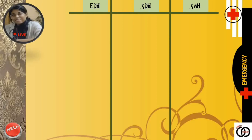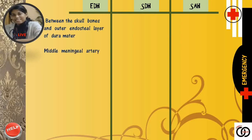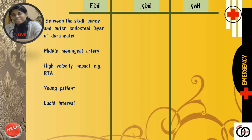So first, EDH. The bleeding occurs between the skull bones and the outer endosteal layer of the dura mater. The source of bleeding is arterial, i.e. the middle meningeal artery. It occurs due to high velocity impact, e.g. road traffic accidents. It mainly occurs in young patients who present with lucid interval, which means a period of consciousness between two episodes of unconsciousness. On CT scan, the bleeding is seen as lens-shaped bleed which is limited by the sutures.